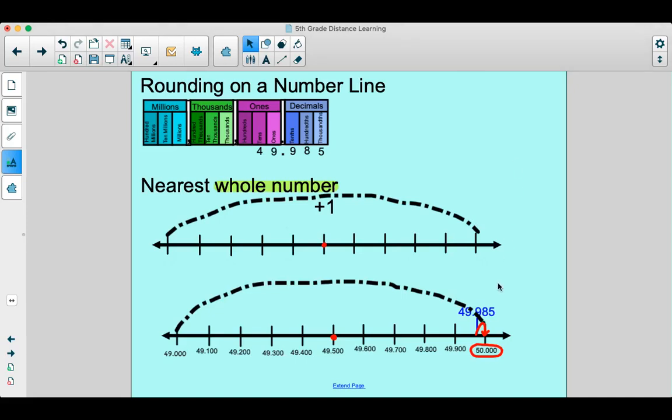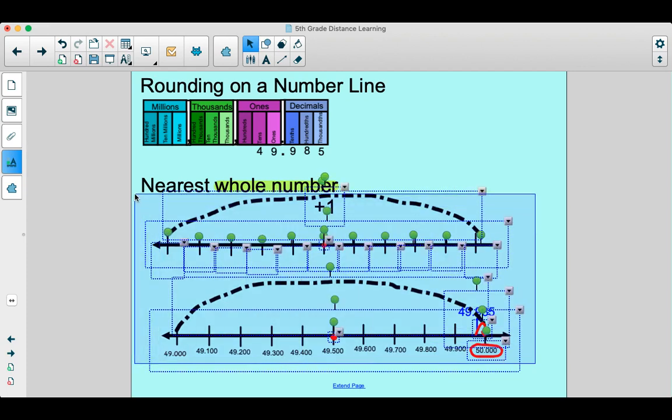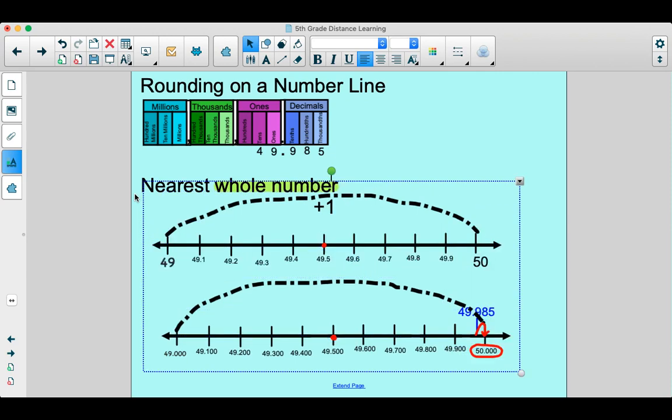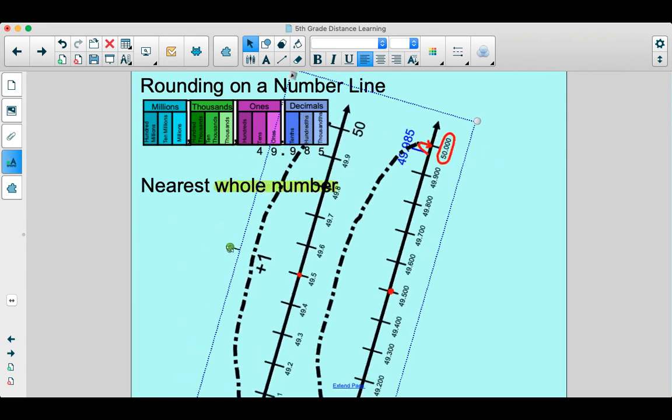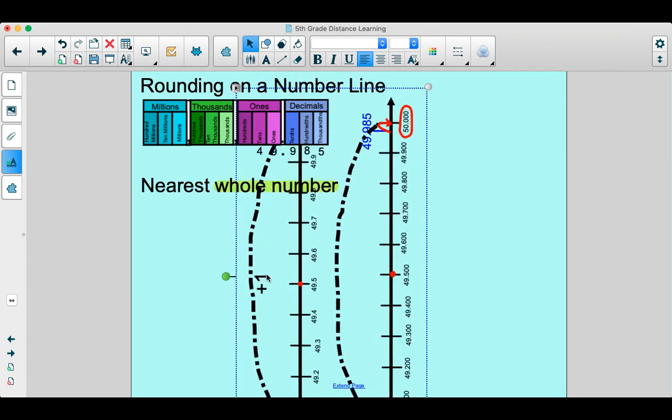All right, now that we know all of that, I want you to notice with me that these are just regular number lines. We've seen number lines for all of our years here in school, right? So I'm going to just show you that we can round on a number line this way, but we can also round on a number line going like this.